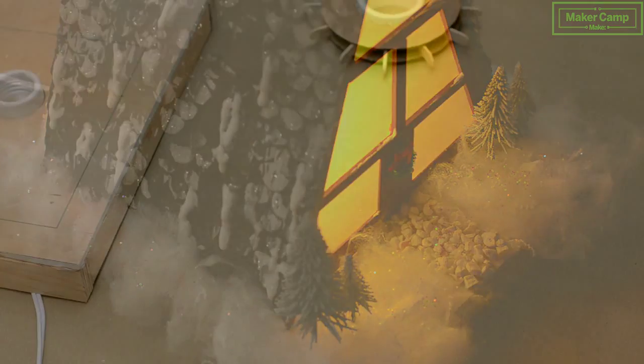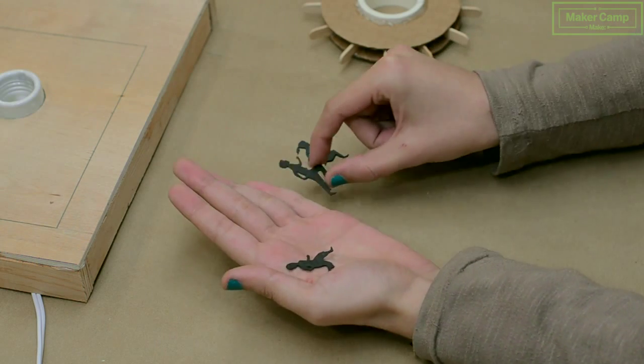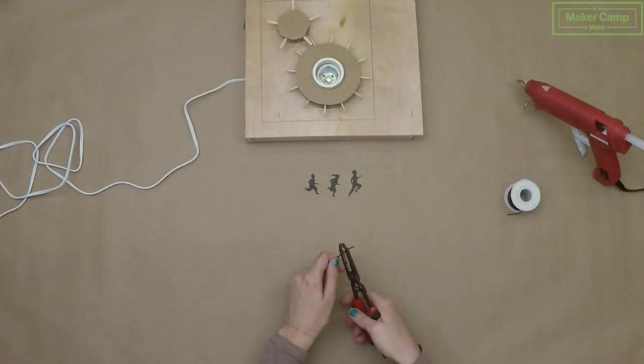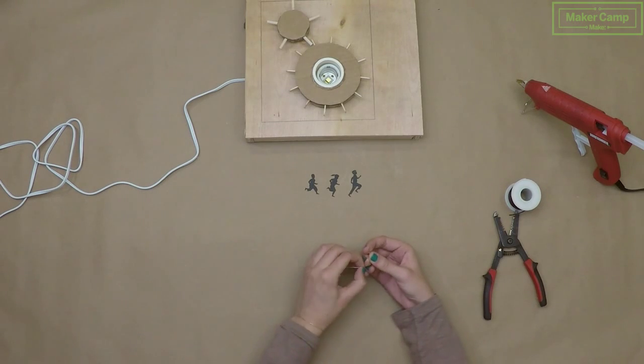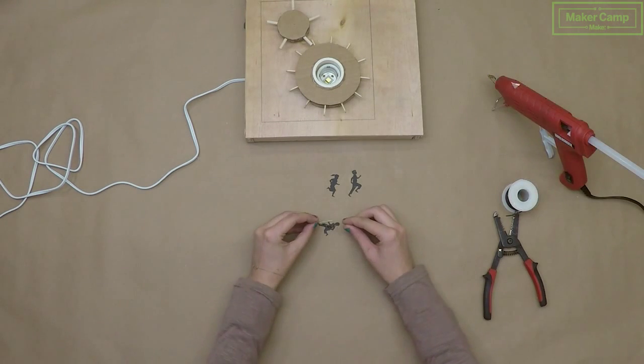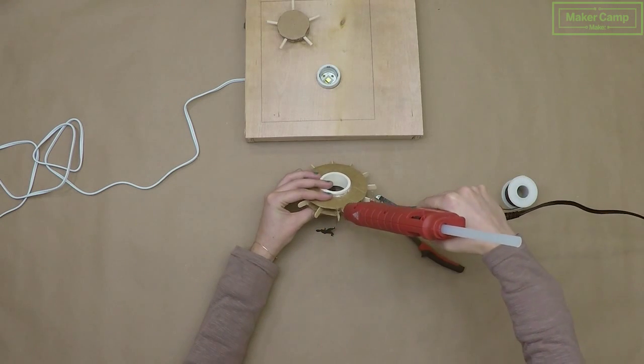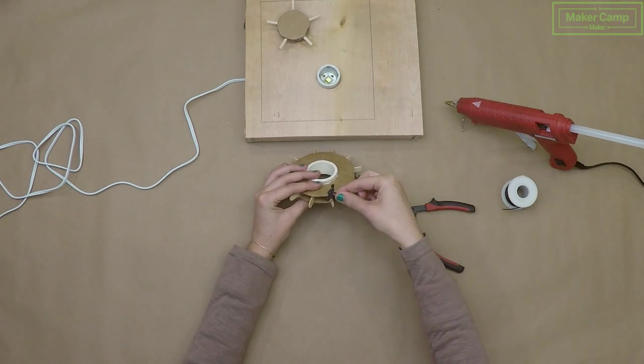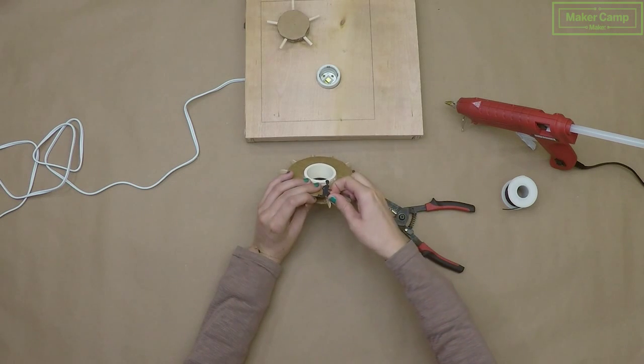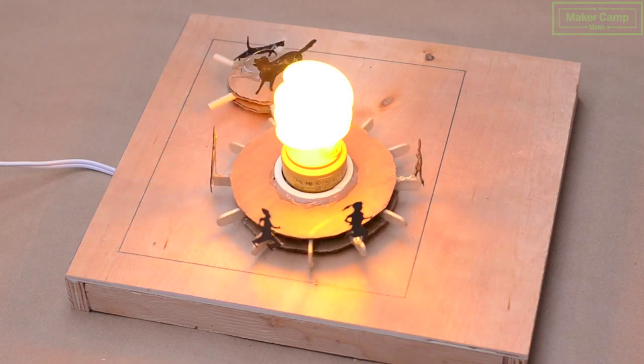So for our people that are running around inside, we actually used a laser cutter to make some pretty detailed kids. To attach your shapes to the gear, cut and strip some hookup wire to use as support. Bend the hookup wire at a 90 degree angle and glue your shape to one side. Apply hot glue to the corrugated edge of the cardboard above one of the spokes. Slide the other side of the bent wire in between the layers of cardboard so that your shape is sticking straight up and is above the spoke. Repeat this process for all of your shapes.